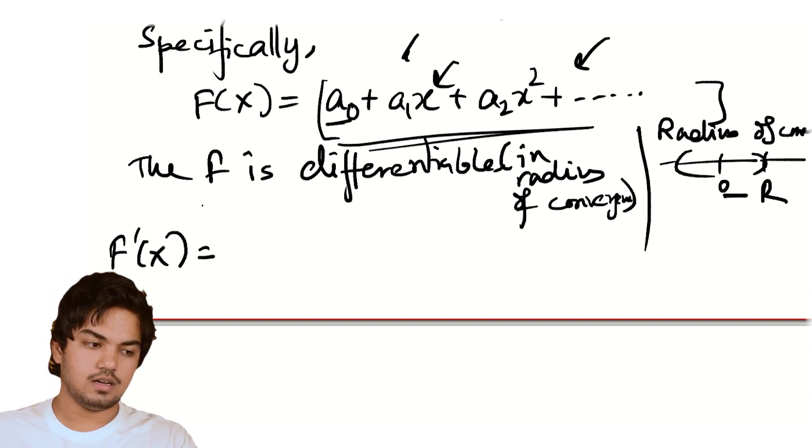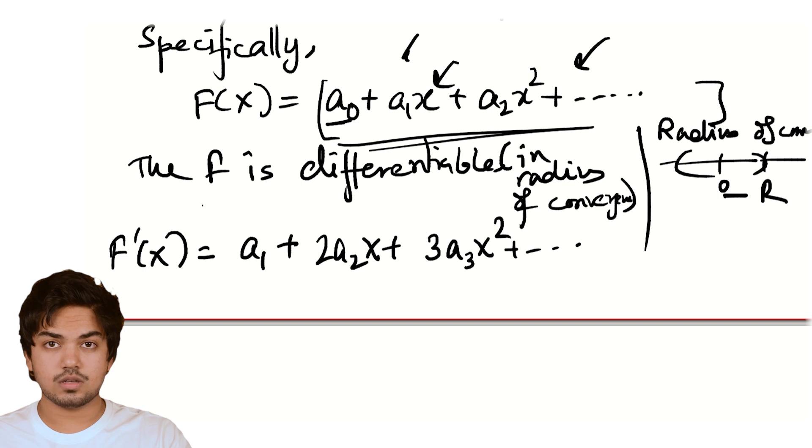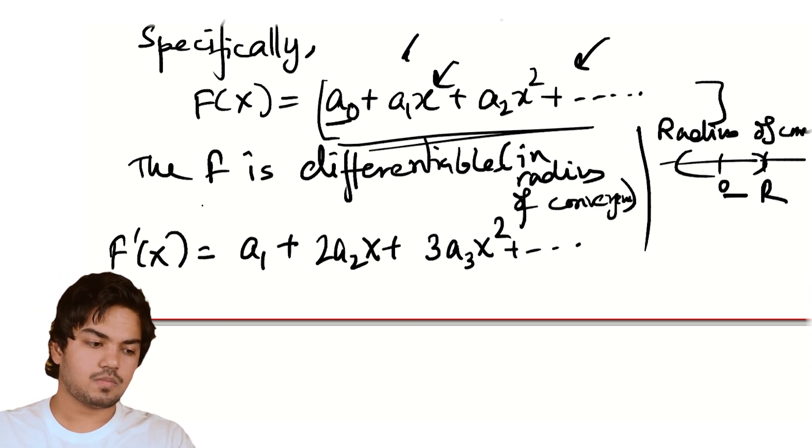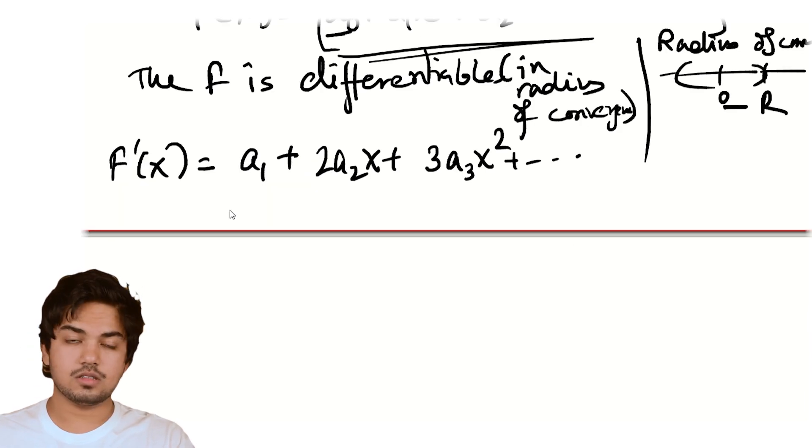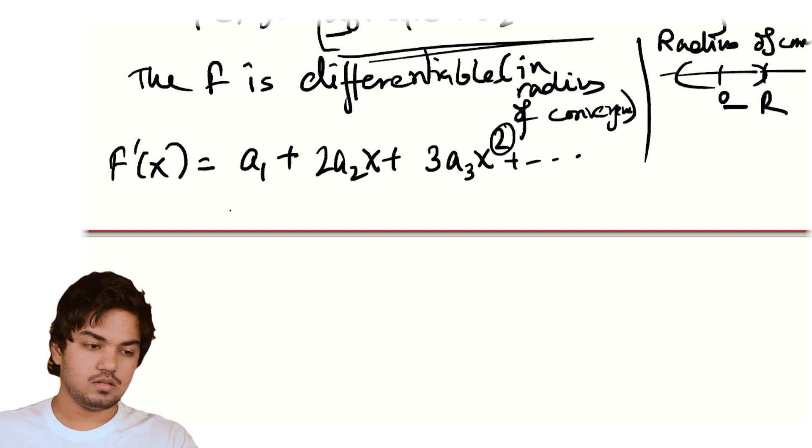a_0 is a constant so it dies. a_1 x is just a_1. a_2 x square is 2a_2 x. You know, a_3 x cube is 3a_3 x square and so on. And you might have noticed a trend right now, which is that generally the coefficient of x to the n is n plus 1 times a_(n+1). If you flip that, the coefficient of the term in the series which has this as the coefficient is, so generally my series f'(x) looks like...